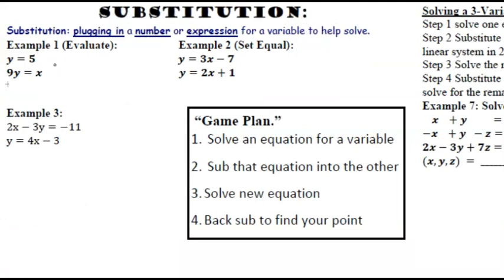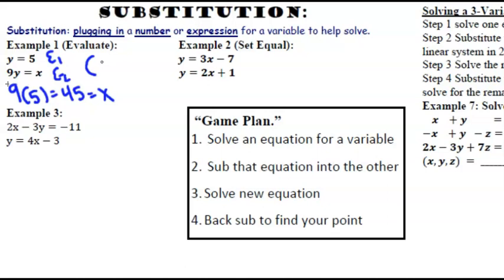Example 1 is just evaluating. When y equals 5, we're going to find what x is. So instead of y in the second equation, we will substitute 5 for y. So it would be 9 times 5 equals 45. So that's what x equals, and your coordinate point would be 45 comma 5. That would be your solution point to the system.